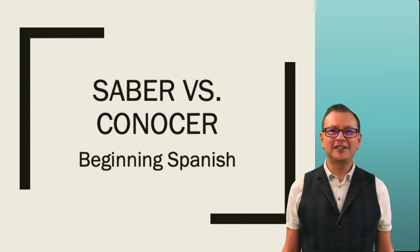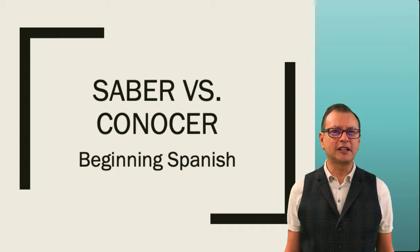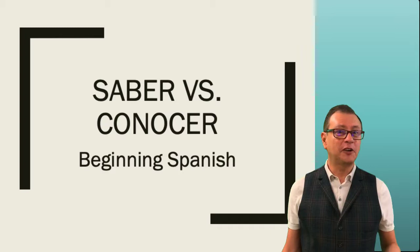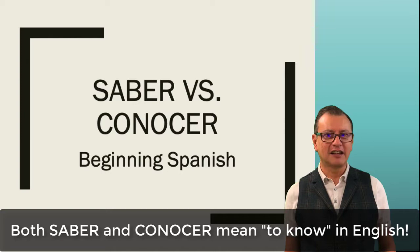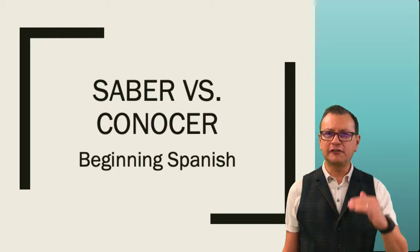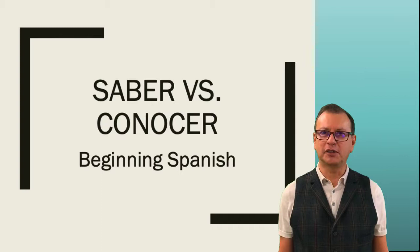Hola, bienvenidos a Advantage. I'm Fabio and today we are going to learn two irregular verbs that cause a lot of problems for many people. Why? Because in English, unfortunately, we only have one of them for both. The verb is 'to know.' In Spanish, the verbs are saber and conocer. These are irregular verbs — they follow no pattern at all, and so all the forms are irregular. We are going to explore them today and learn the differences between these two important verbs.